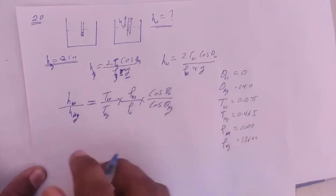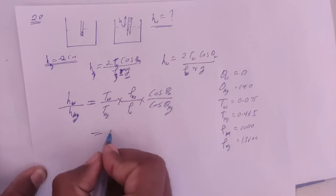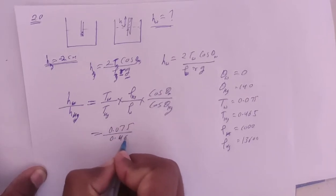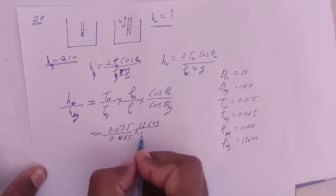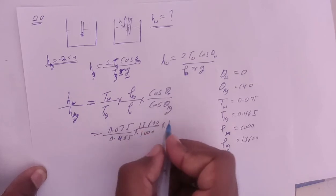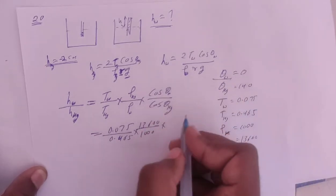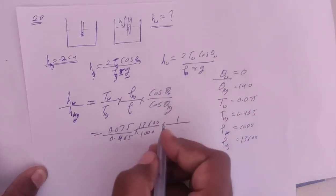Now let's put these values in the ratio. Surface tension: 0.075 divided by 0.465. Density: 13600 divided by 1000. cos 0 is 1.